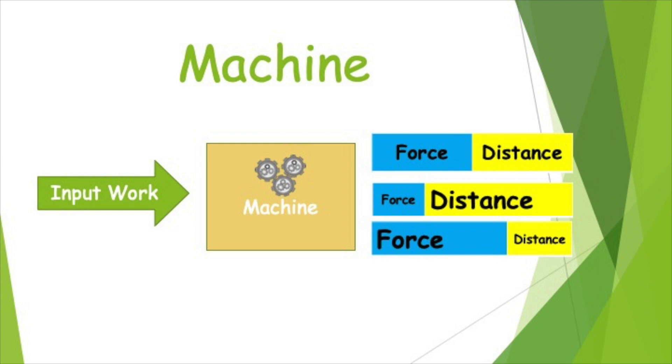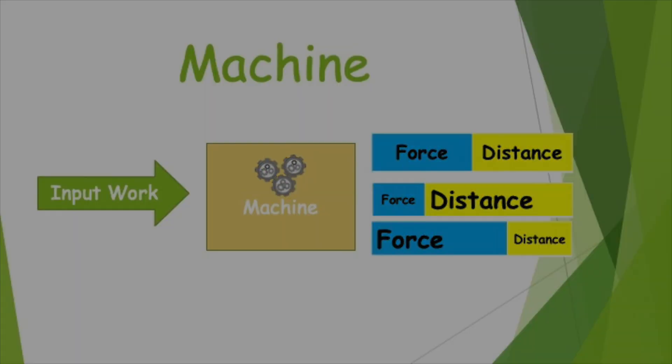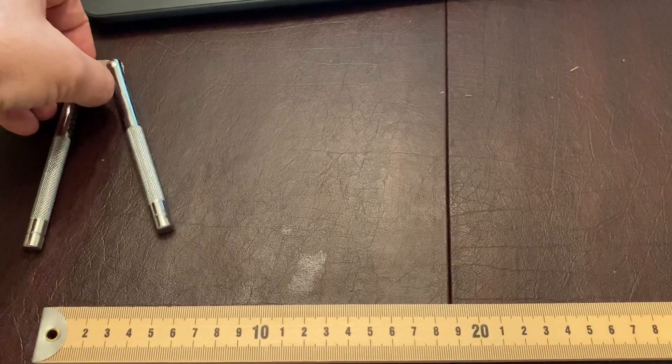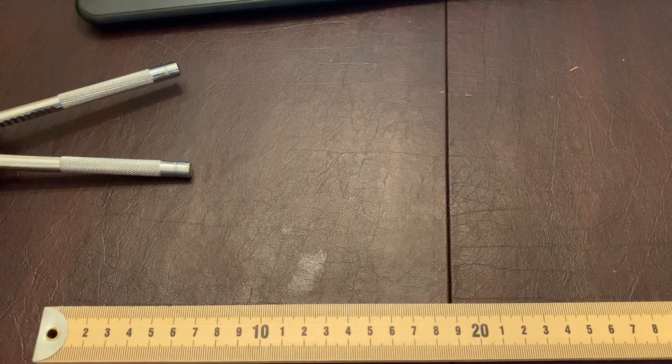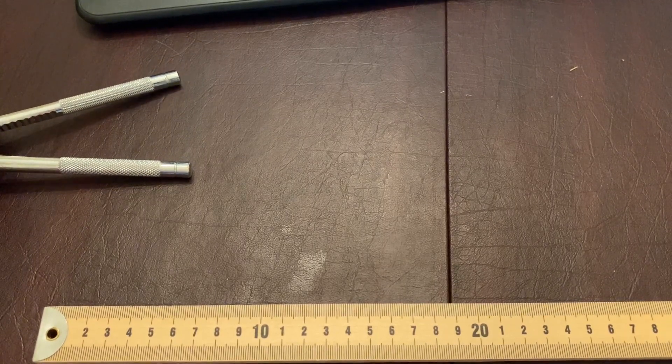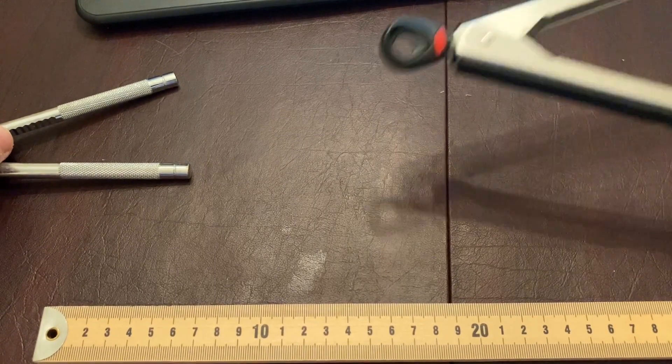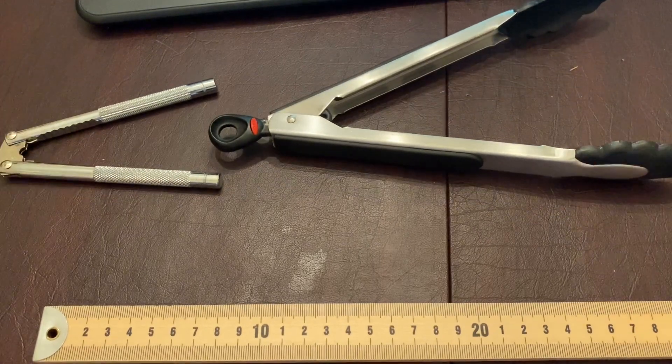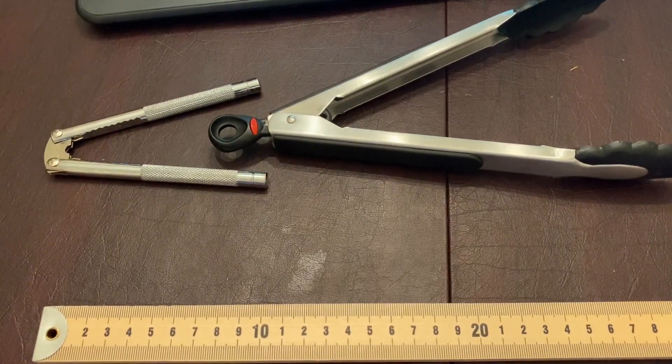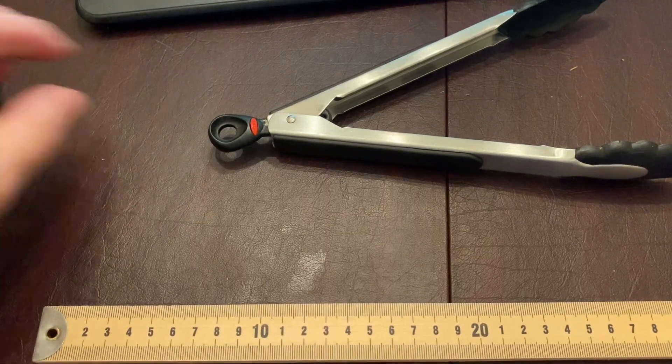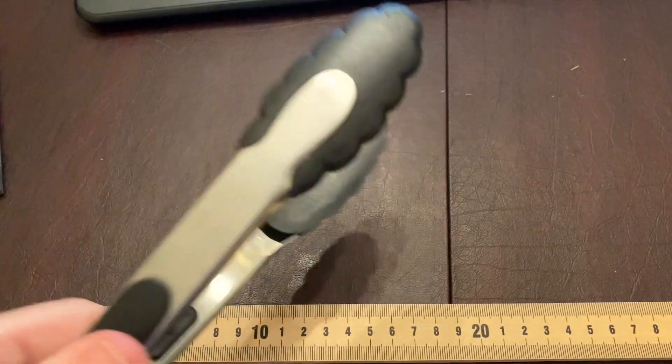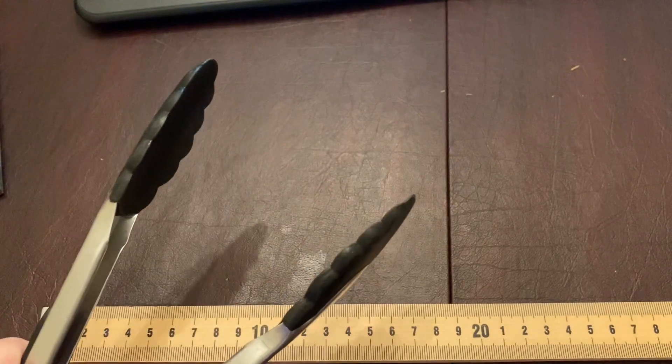To help explain or give an example of machines that increase force and decrease distance or increase distance and decrease force, I got two machines that look very similar, but they're used very differently. This one you may recognize as a nutcracker and this one as a set of cooking tongs for turning things over on the grill,